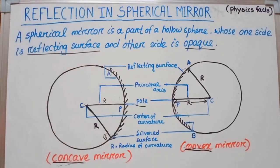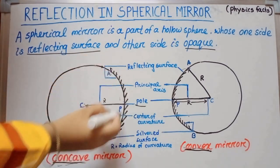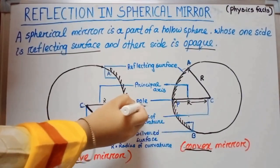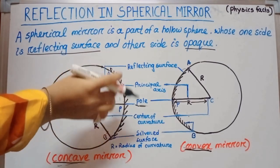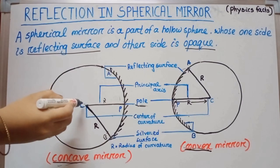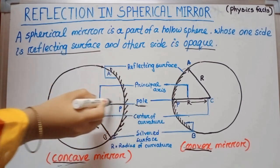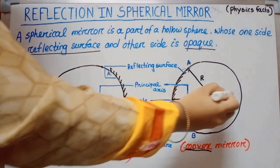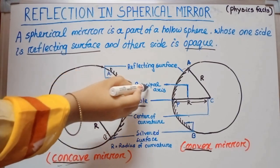Now we go to some important terms of the spherical mirror. First one: pole — the middle point of the mirror is called the pole. The center of the sphere of which the mirror is a part is called the center of curvature. The line passing through the pole and center of curvature is called the principal axis.